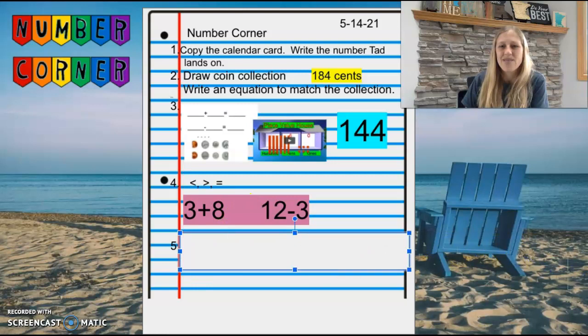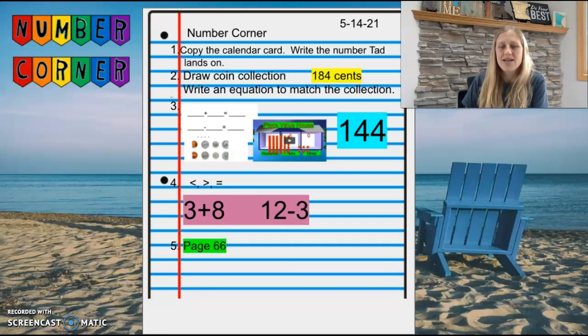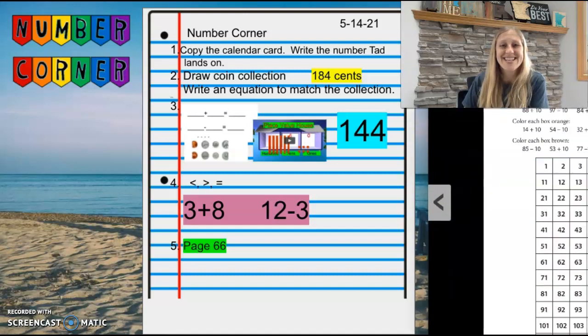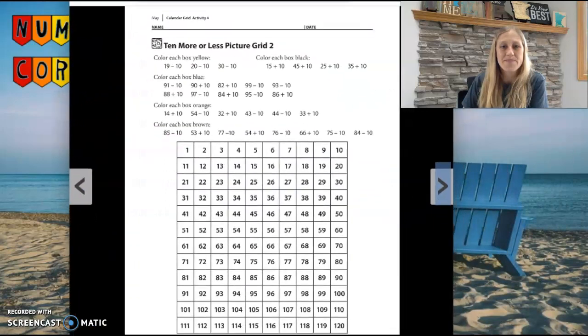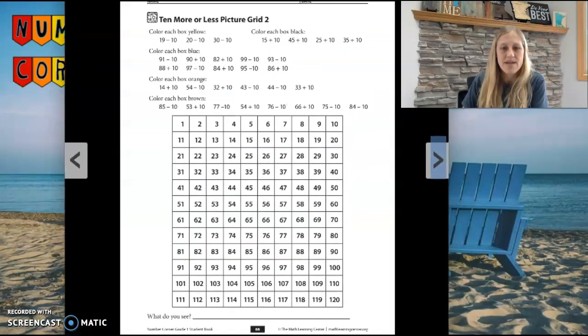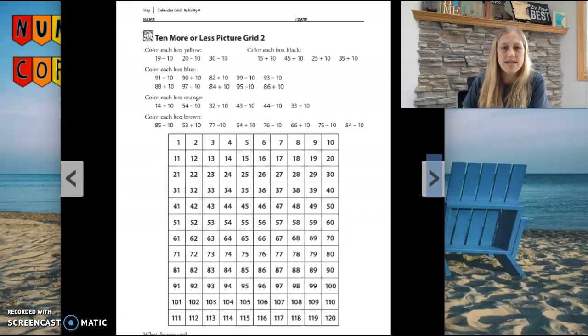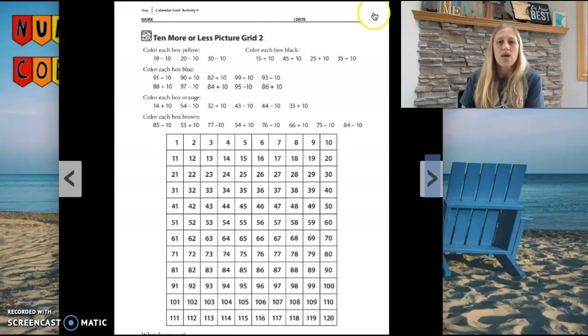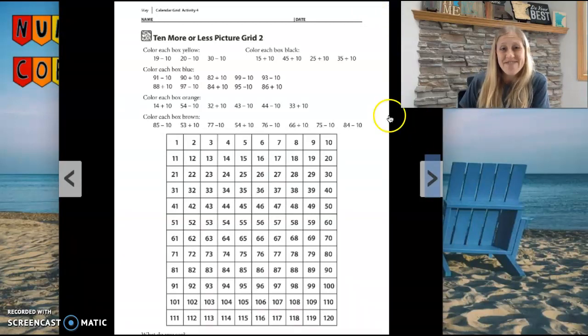We are moving on to number five. For number five, you will need page 66 in your Number Corner journal. Press pause while you turn to that page. Again, page 66 in your Number Corner journal. This is such a fun activity.